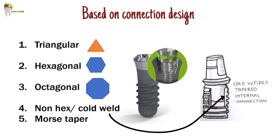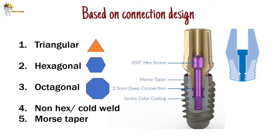In the cold weld design, no connection screw is needed — the abutment gets firmly engaged and cold welded into the implant connection. It is claimed that this connection forms a tight seal at the implant-abutment connection interface and prevents microbial growth. Another type is the Morse taper connection, which is a combination of both hexed and non-hexed connections. It has the hex in the deepest half of the internal connection for anti-rotational feature, while the smooth non-hexed surface in the crestal half makes a tight seal to prevent bacterial growth.